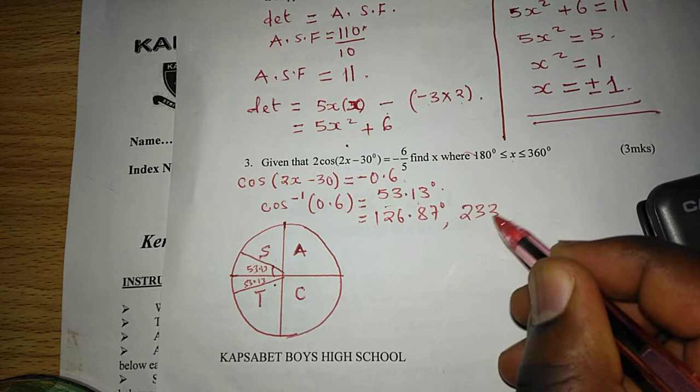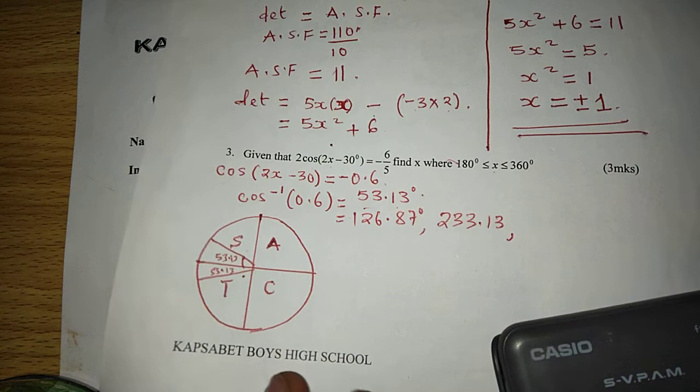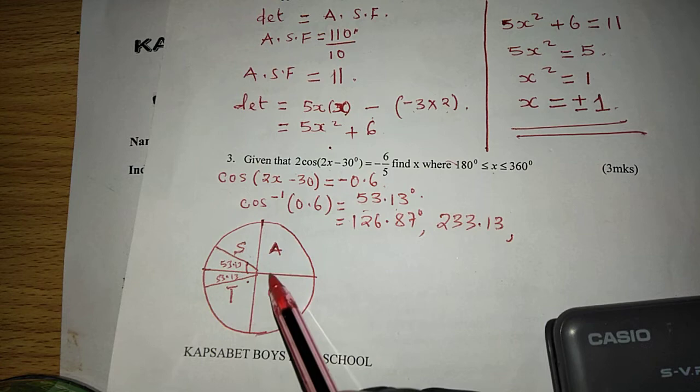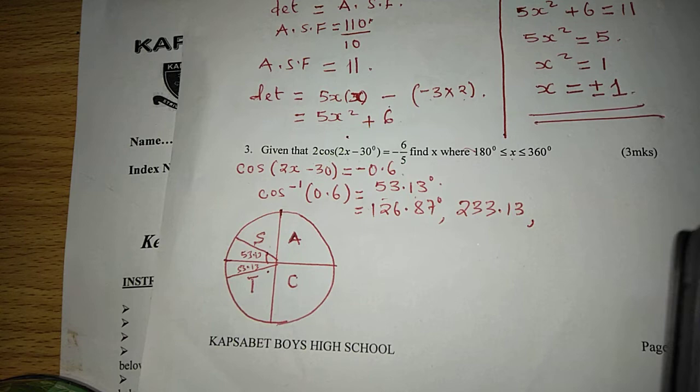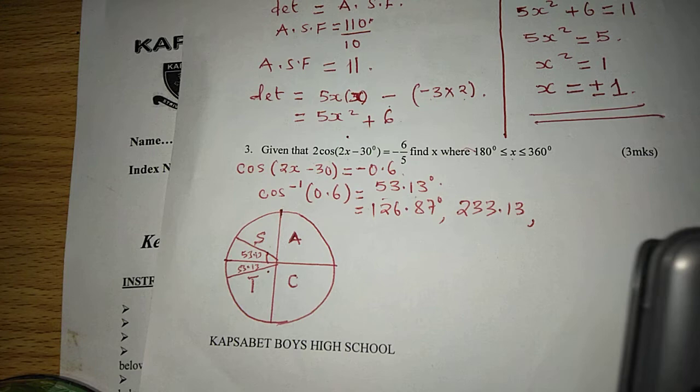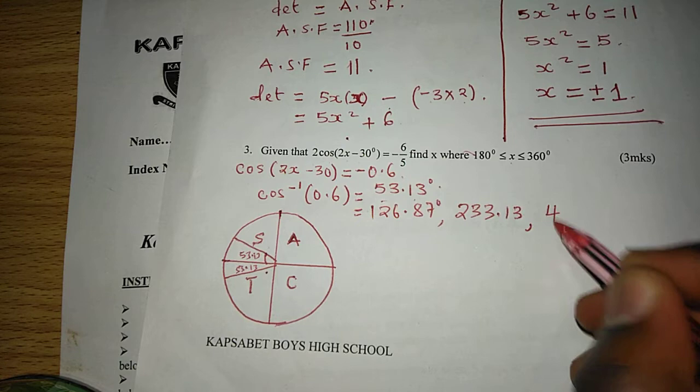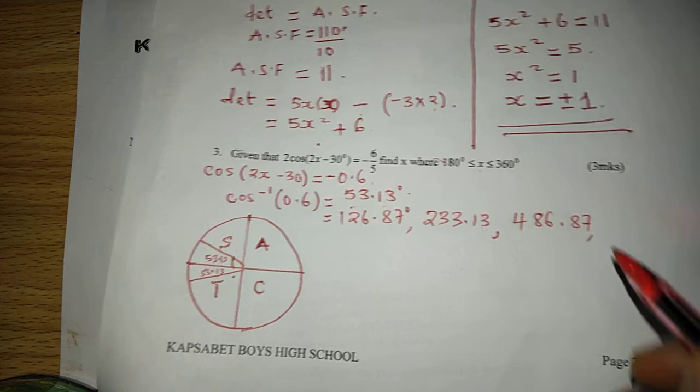We can proceed with getting more angles, whereby now if we go for a complete cycle, in the next cycle, this angle becomes, because we will have added 360, then it is 360 plus 126.87. That gives us 486.87.